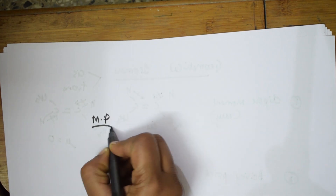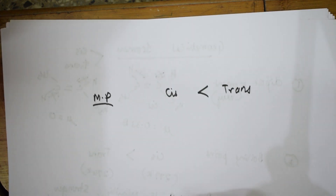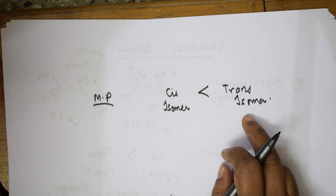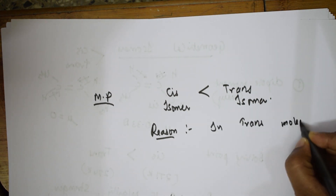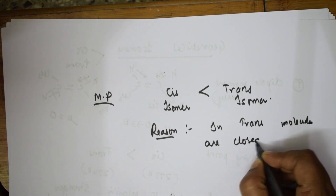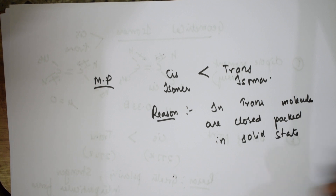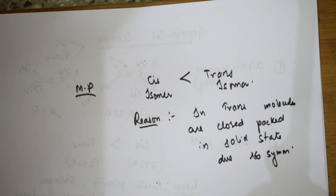The next important property is melting point. For melting point, the cis isomer melting point is less than that of the trans isomer. The reason is that in the trans isomer, molecules are closely packed in the solid state due to symmetry. Because of this symmetry, the melting point of the trans isomer is greater than the cis isomer.